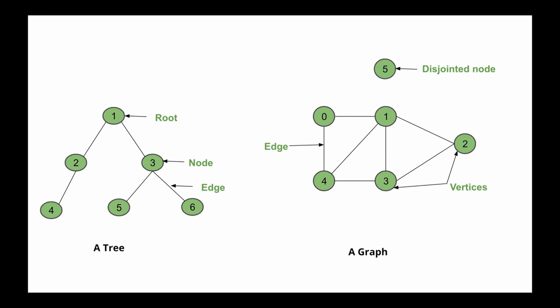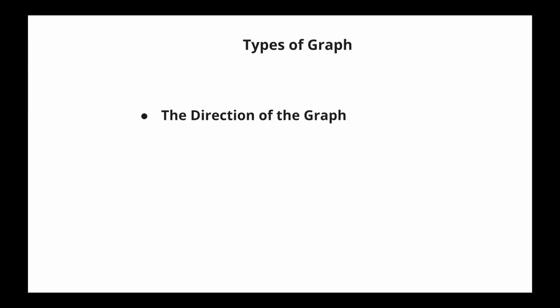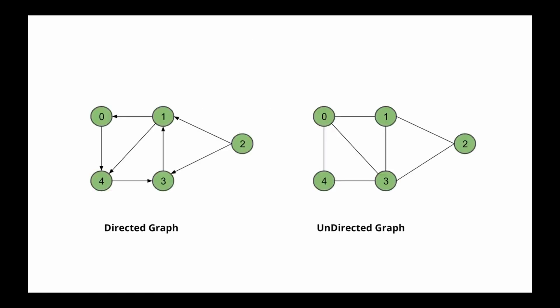Graphs can have cycles, but this is not possible in trees. A cycle simply means that you can move from one node and still return back to that same node. For example, we can move from node 0 to node 1 to node 4 and then come back to node 1.